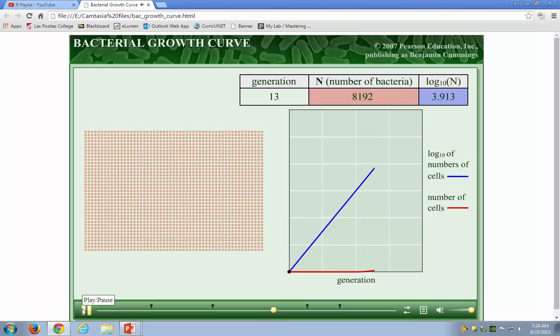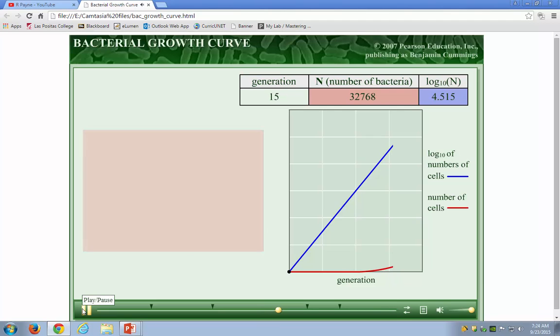It's convenient to represent the growth of the bacteria on a logarithmic graph, because the numbers of bacteria increase very rapidly with each subsequent generation. When the log of the number of cells is plotted versus the generation, the graph is linear.